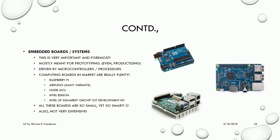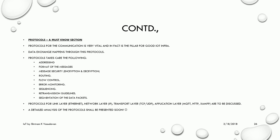The next enabling technology is embedded boards and systems. Three boards are highlighted: the Intel Up Squared Grove IoT Development Kit, Raspberry Pi, and Arduino. They are all driven by microcontrollers or processors and are essentially mini-computers. They are used for prototyping and productizing, and in some cases are used in the final product itself. We frequently use all these to build our final prototype and verify if the proposed system works.